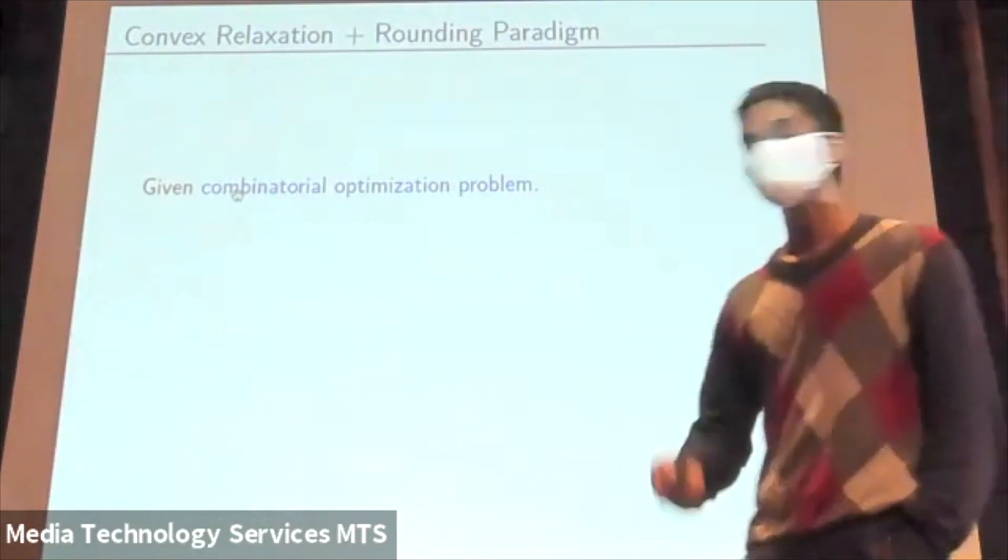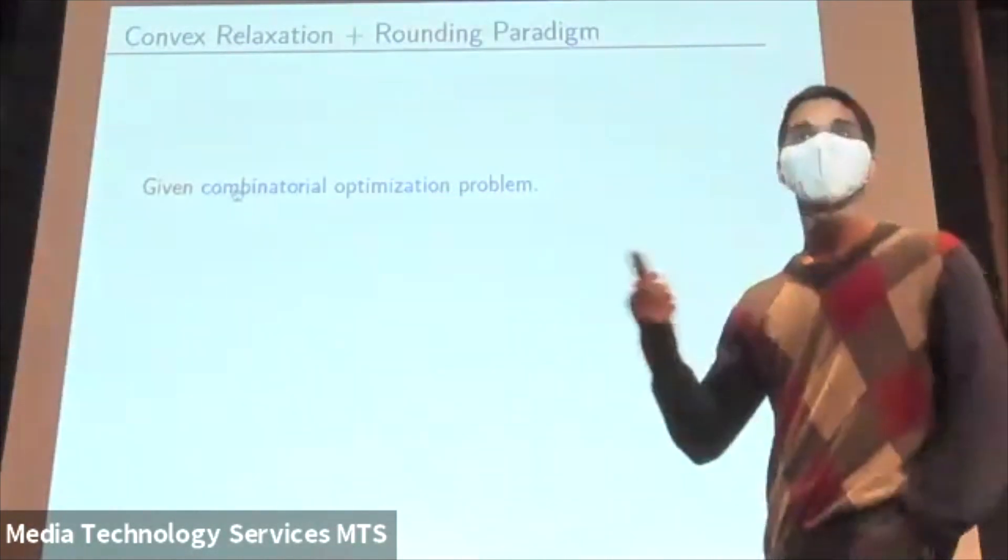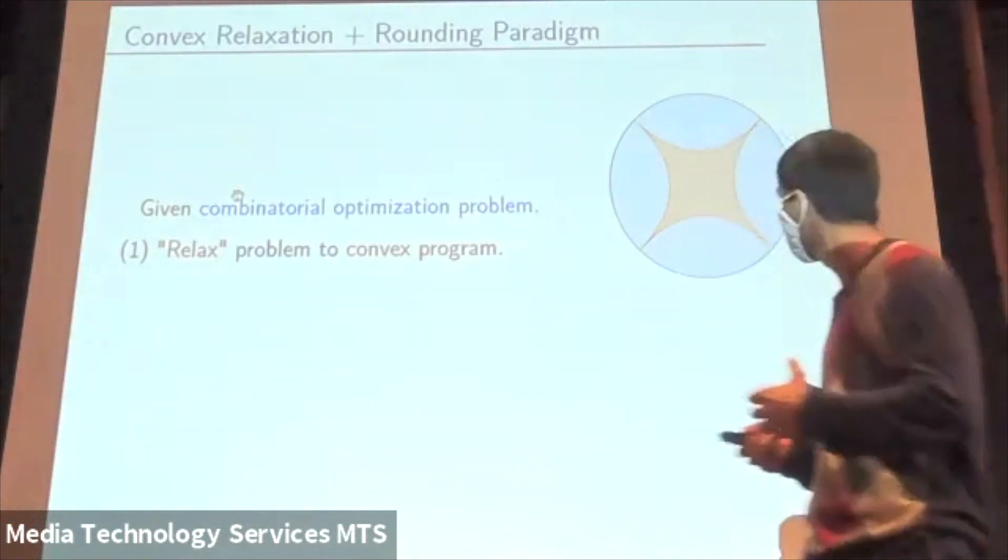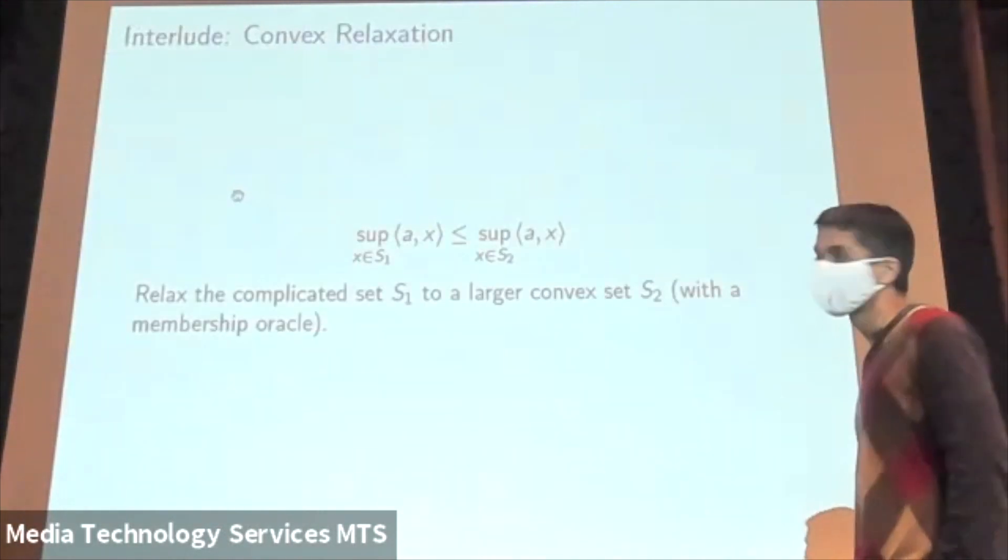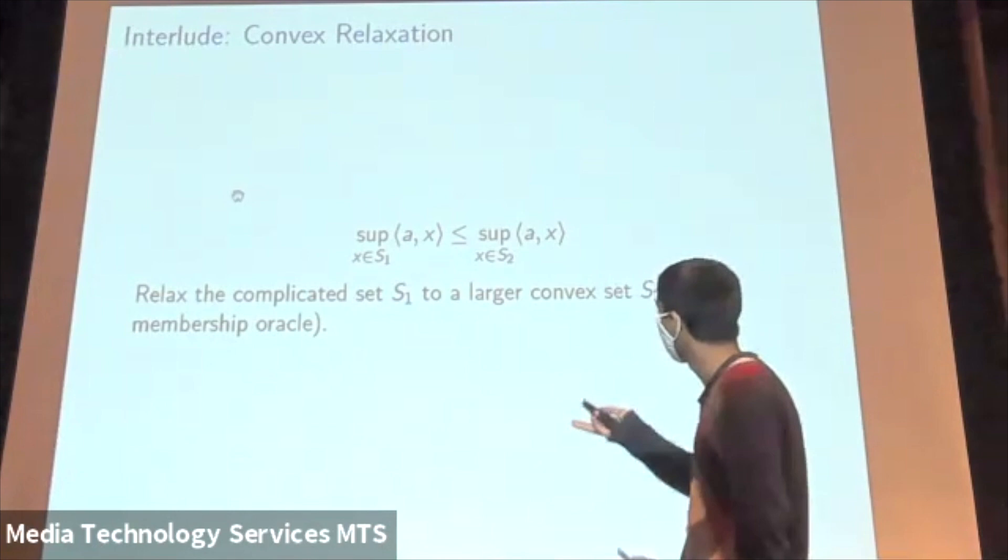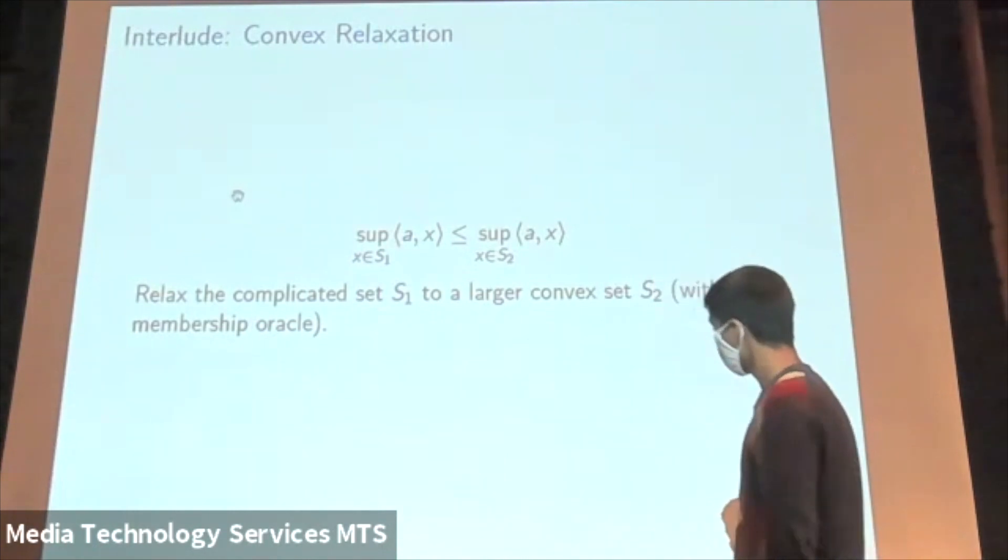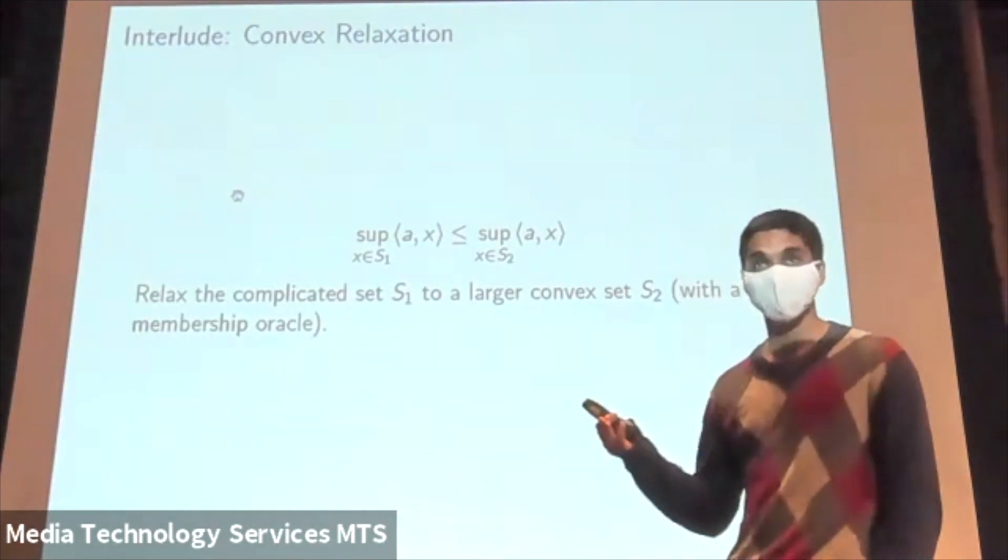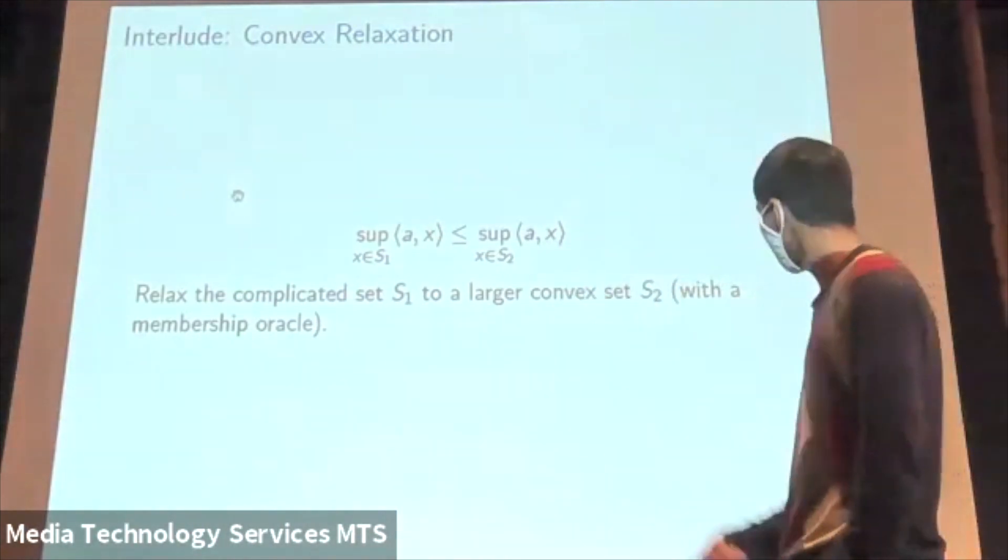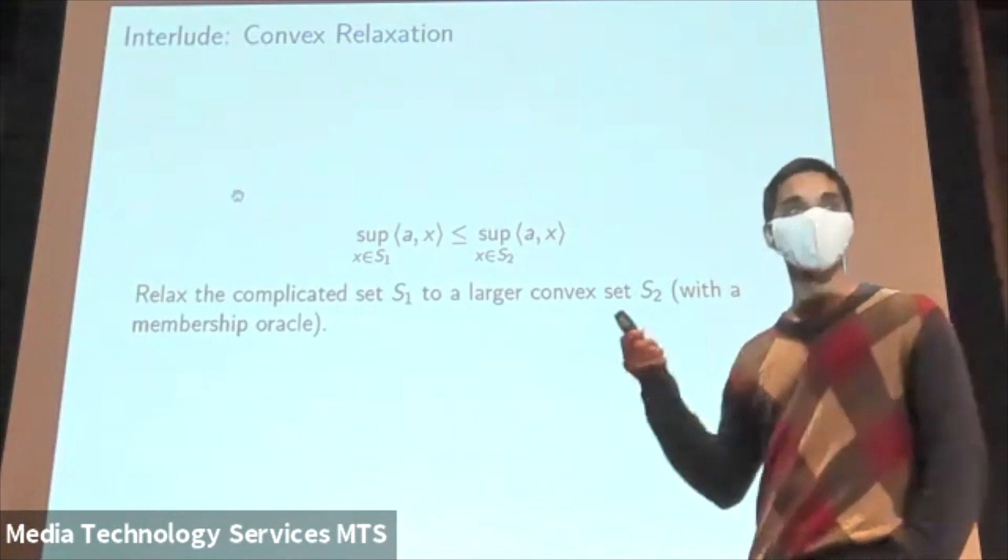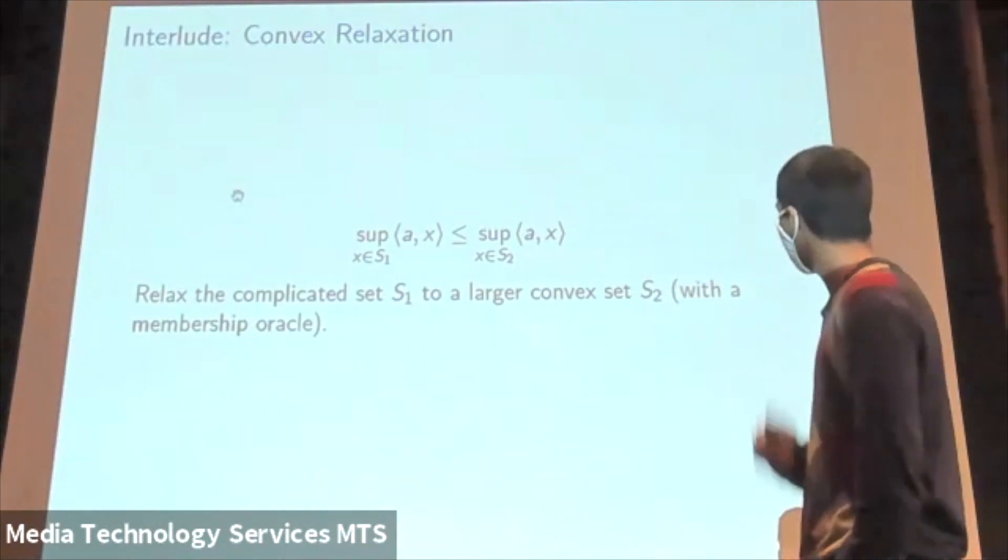Regarding the general paradigm, given some combinatorial optimization problem, what you do is you relax the region you're optimizing over to a convex region. To give a more specific example, let's say we have some complicated set S1 and we want to maximize the linear function over this set. What we do is define a set S2 that is larger containing the set S1 and is convex. So we can use our convex programming algorithm. Of course, the optimum returned by S2 might be much larger, but the hope is if you choose S2 judiciously, you've got an approximation.